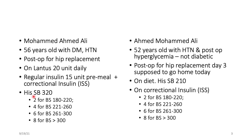Let's begin with the scenario. The first patient, Mohamed Ahmed Ali, 56 years old, with diabetes and hypertension, postoperative for hip replacement. He is on Lantus 20 units daily, regular insulin 15 units pre-meal, plus correctional insulin. His sugar is 320, meaning he will take 20 Lantus plus 15 regular, plus additional regular as a correctional sliding scale.